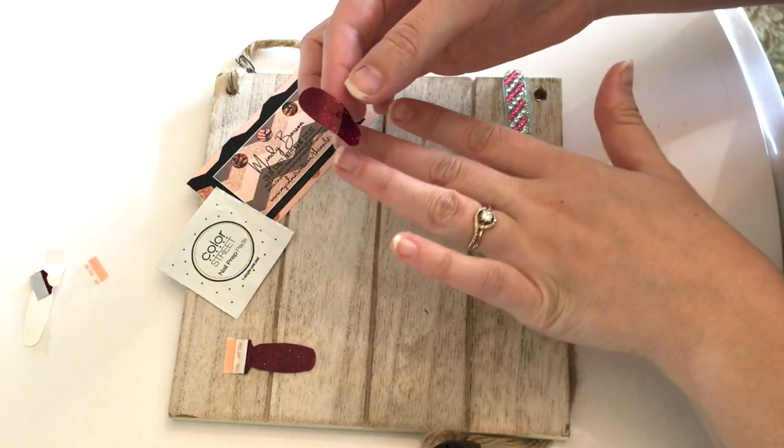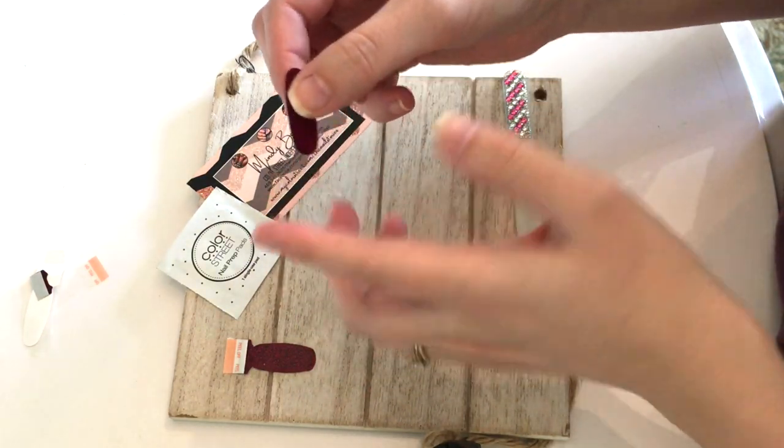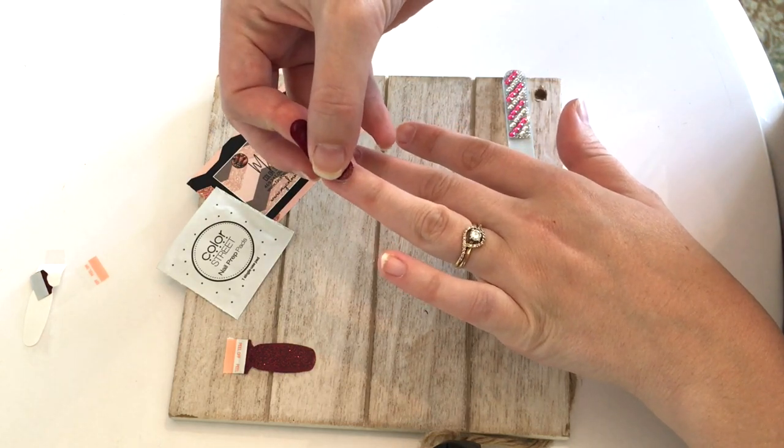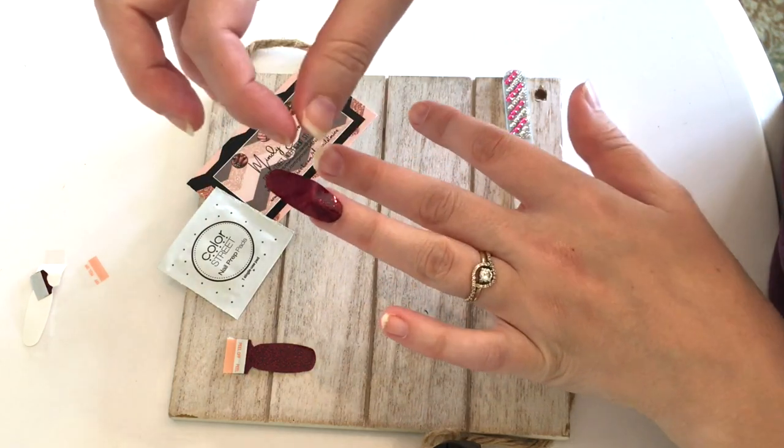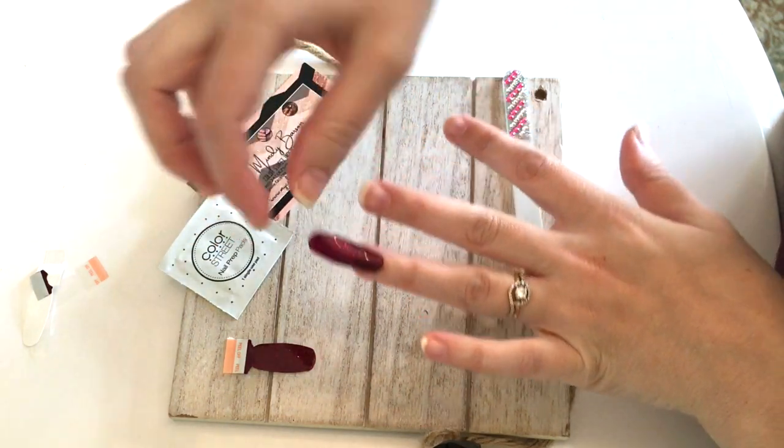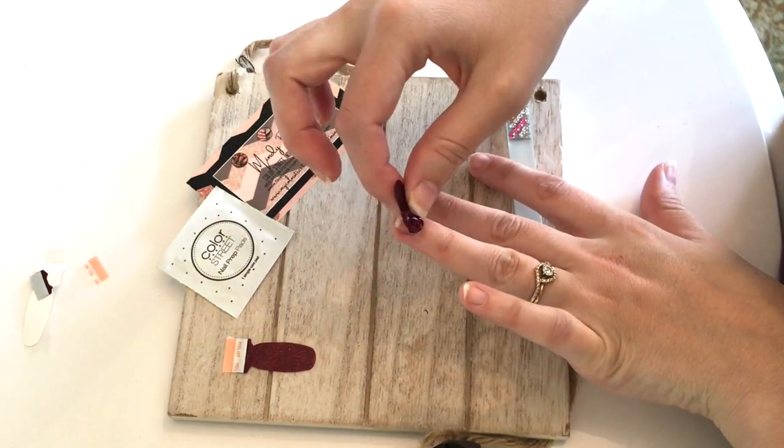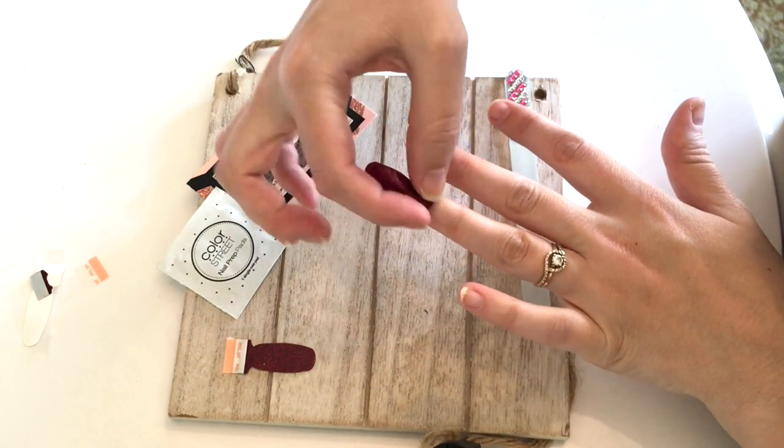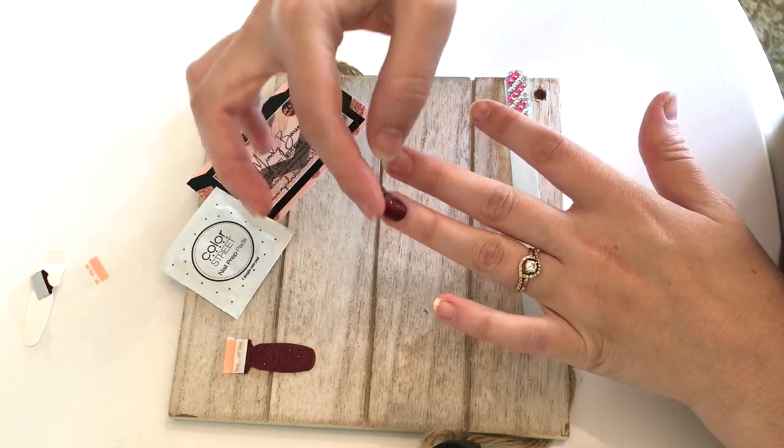For me, this one fits pretty perfectly on the bigger end on my ring finger here. So what you'll do is just put it on top right below the cuticle and smooth it down. If you don't get it perfect the first time, you can reposition it, and then you just smooth it down.